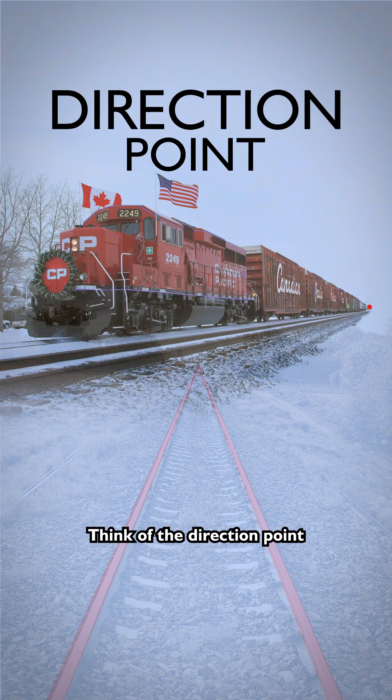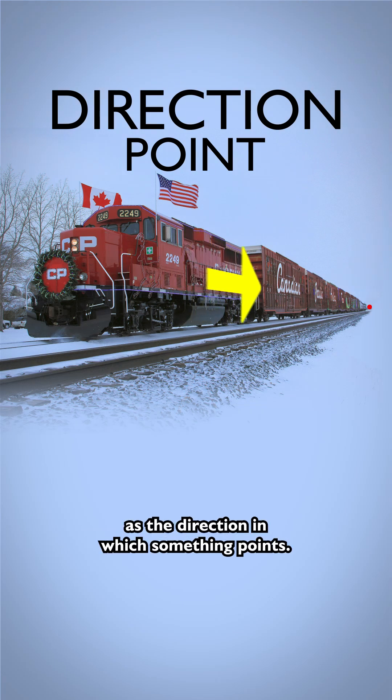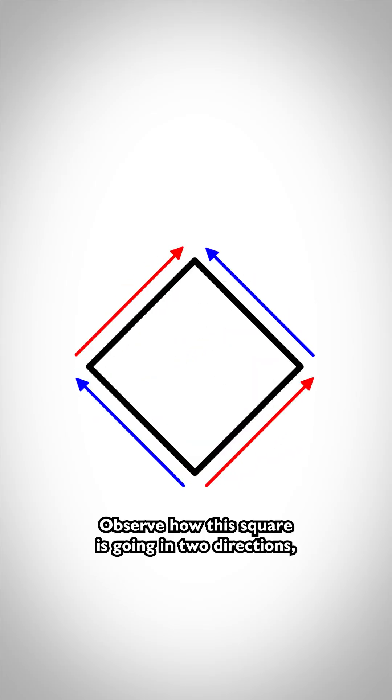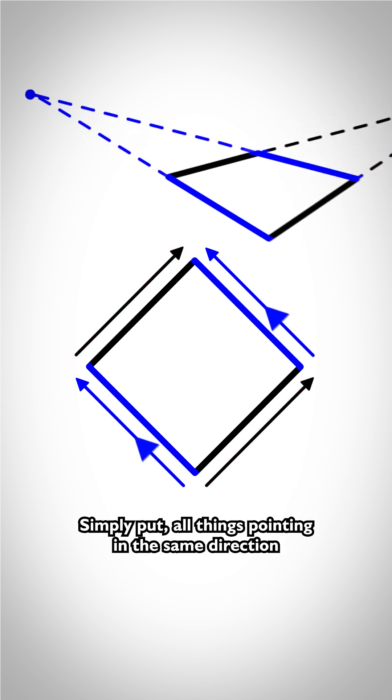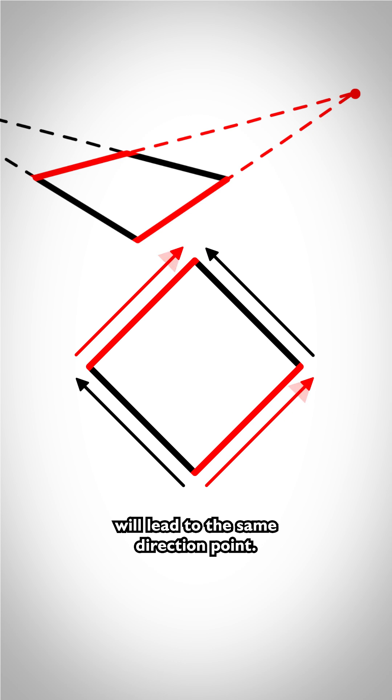Think of the direction point as the direction in which something points. Observe how this square is going in two directions, each having its own direction point. Simply put, all things pointing in the same direction will lead to the same direction point.